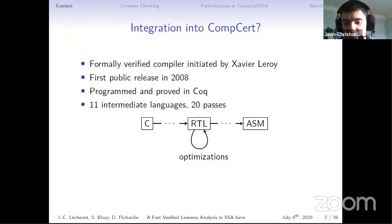To integrate Boissinot et al.'s approach, one could think of CompCert because it's one of the best-known verified compilers. It's a formally verified compiler initiated by Xavier Leroy, whose first public release was in 2008. It's programmed and proved in the Coq proof assistant. It has 11 intermediate languages and 20 passes.